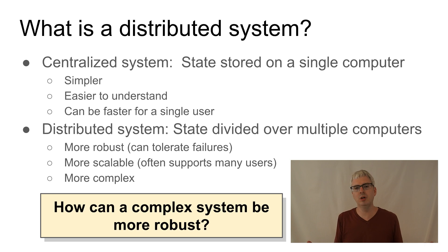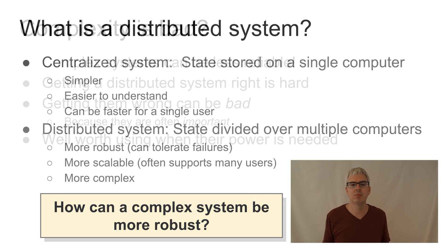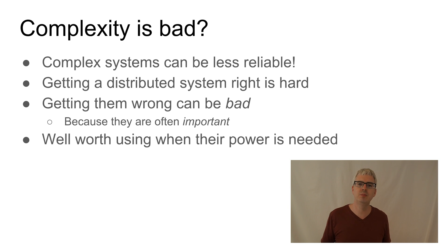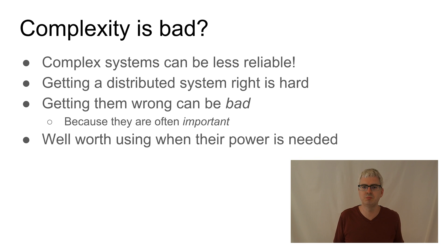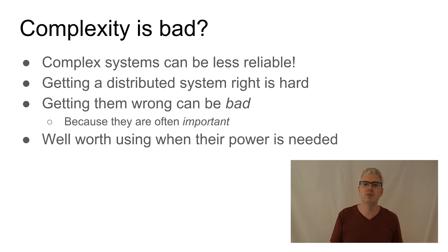You might be worried because complexity is bad, right? It's hard to build a complex system that is also more reliable. And I can admit — you're right. Complex systems are hard to build correctly. This is one of the reasons why distributed systems is considered an advanced topic in computer science. I'm not going to sugarcoat it: it's hard. But it's worth it. You can solve some really important problems using distributed systems which are not possible to solve using centralized systems.